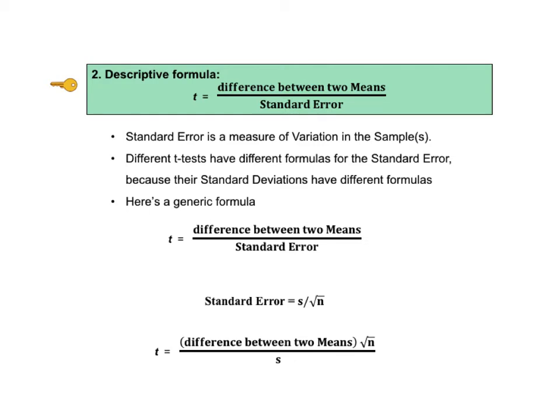Since standard error is in the denominator of the formula for t, the square root of n is in the denominator of the denominator. Let's simplify the formula with simple algebra. And we get t equals the difference between two means times the square root of n divided by s. t is the difference between the two means times the square root of the sample size divided by the standard deviation.